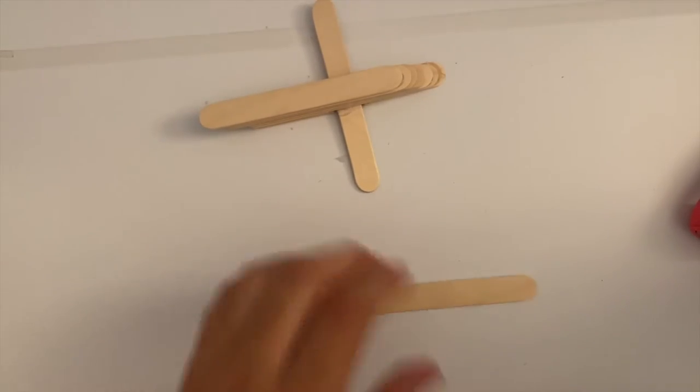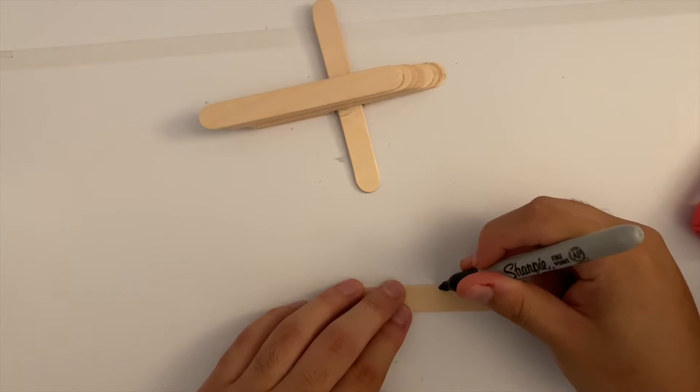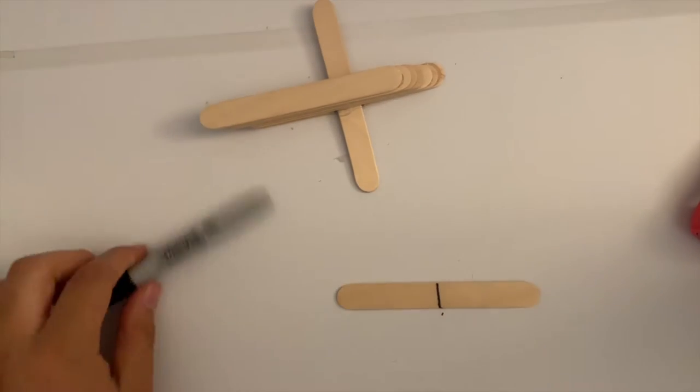Now grab a new piece of stick and make an indicator right in the middle. This piece of wood will be used for the back wing.